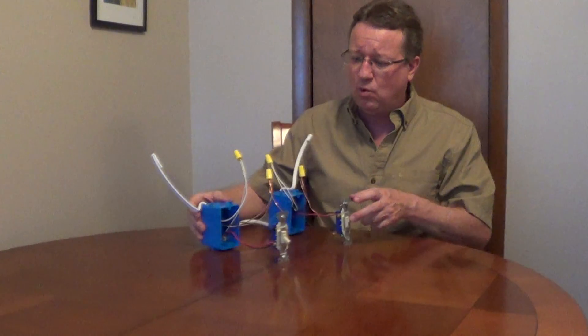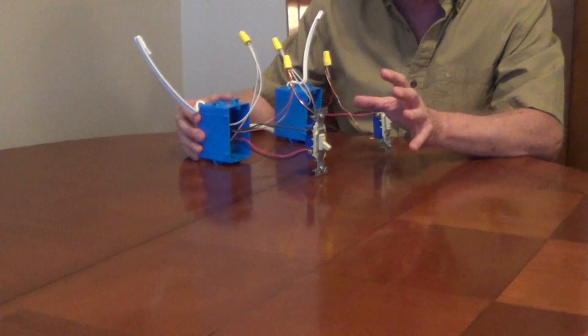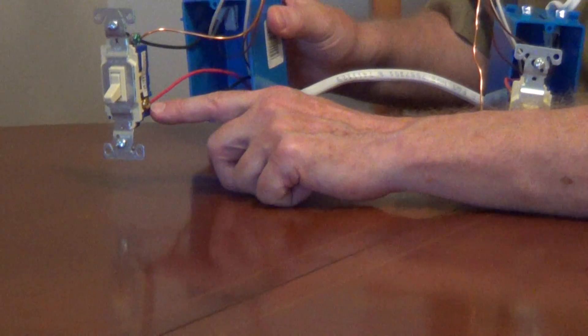What you need to know is what wire is connected to the dark-colored screw terminal. So on a three-way switch, you have one dark-colored screw terminal, you're going to have two light-colored screw terminals, and then you're going to have a ground screw.